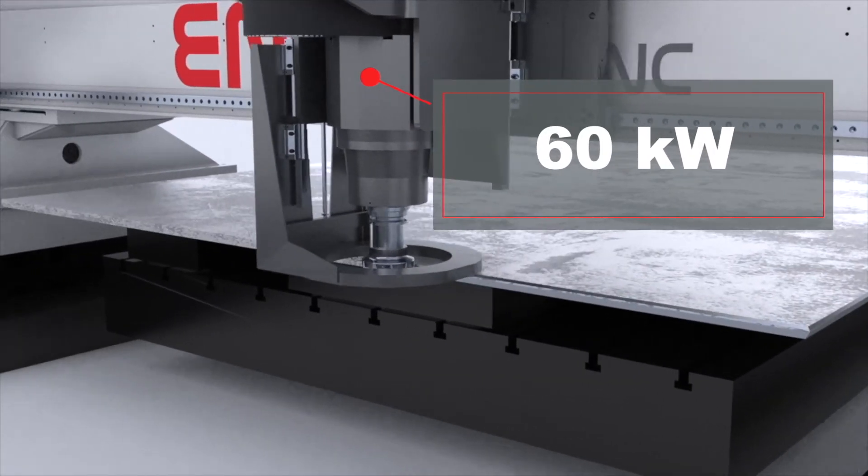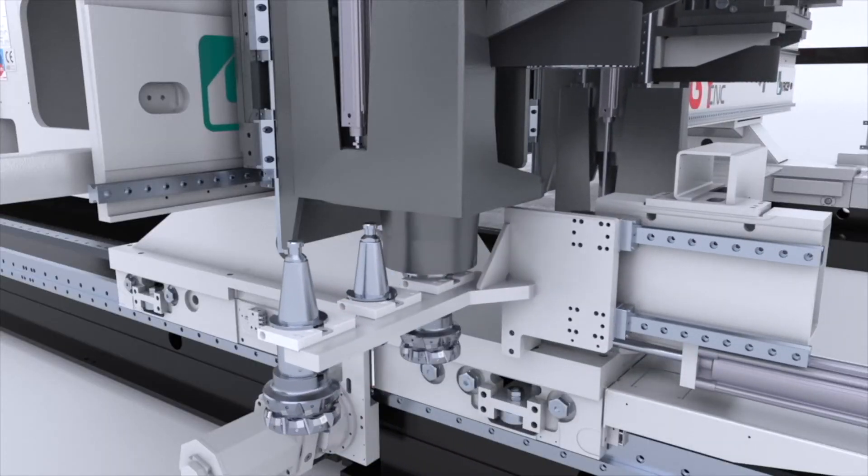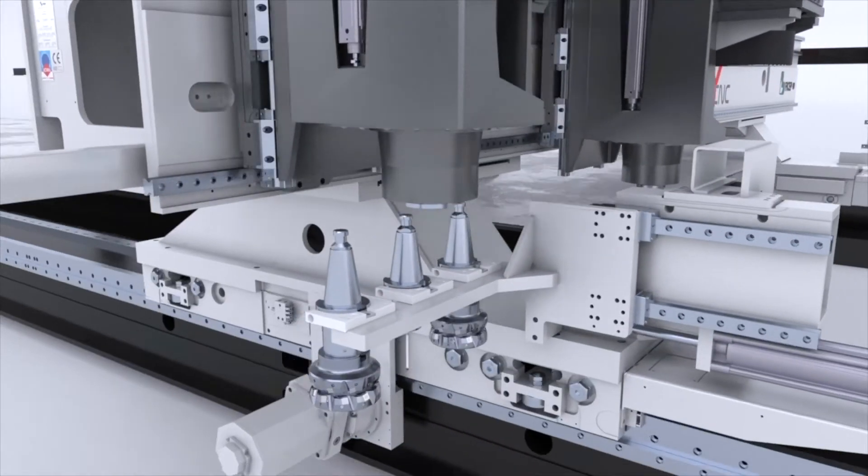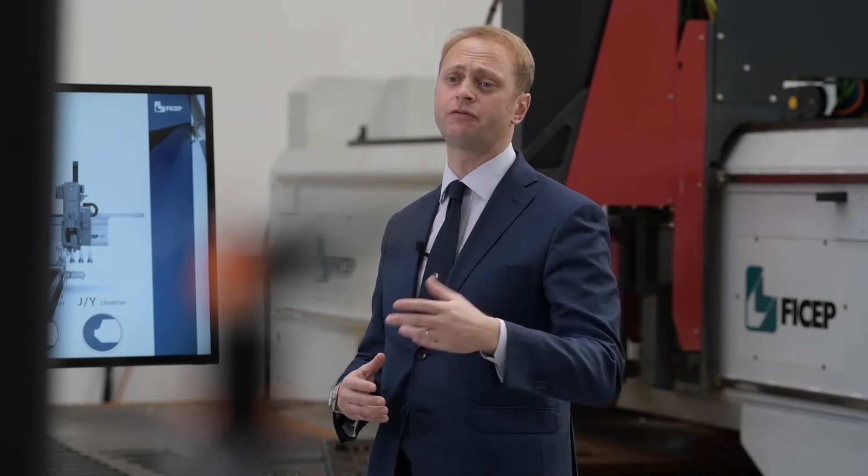The tool changer is designed to be outside the gantry, over the race, to facilitate the operator in the tool changing operation. In fact, it doesn't need to access the machine, but it can move the spindle closer, up to the very edge of the gantry, for an easy and safe tool changing.